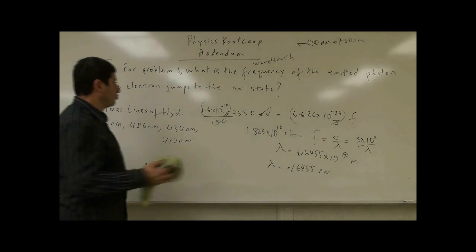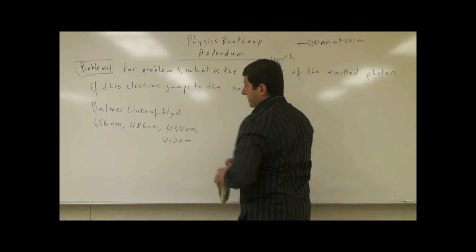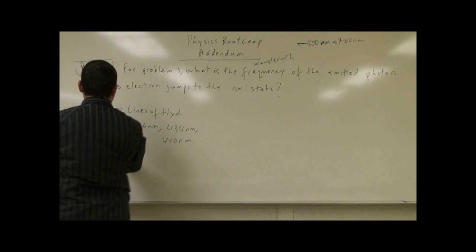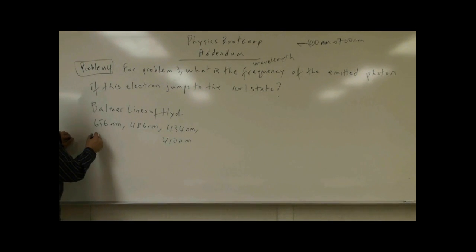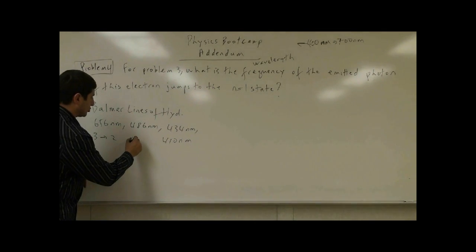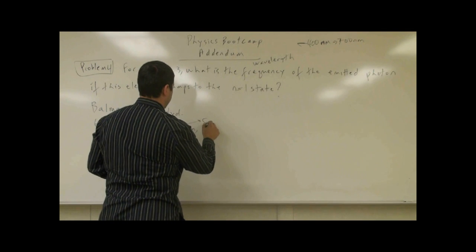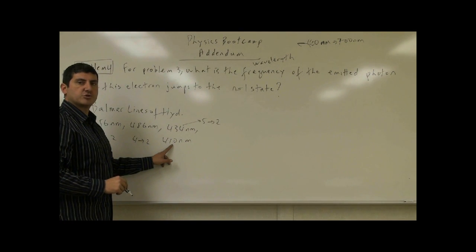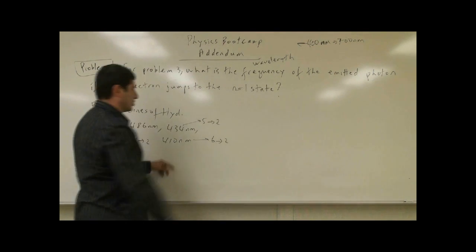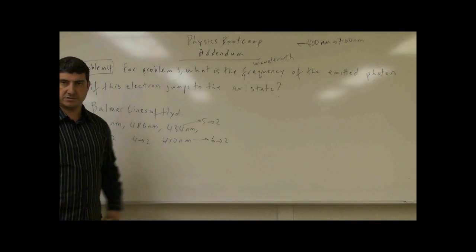We can also observe these lines in the spectra of Jupiter and other planets with abundant hydrogen. The 656 nm line occurs when the electron jumps from the third to the second orbit — large wavelength means small energy difference. The 486 nm line occurs from the fourth to the second, 434 nm from the fifth to the second, and 410 nm from the sixth to the second.